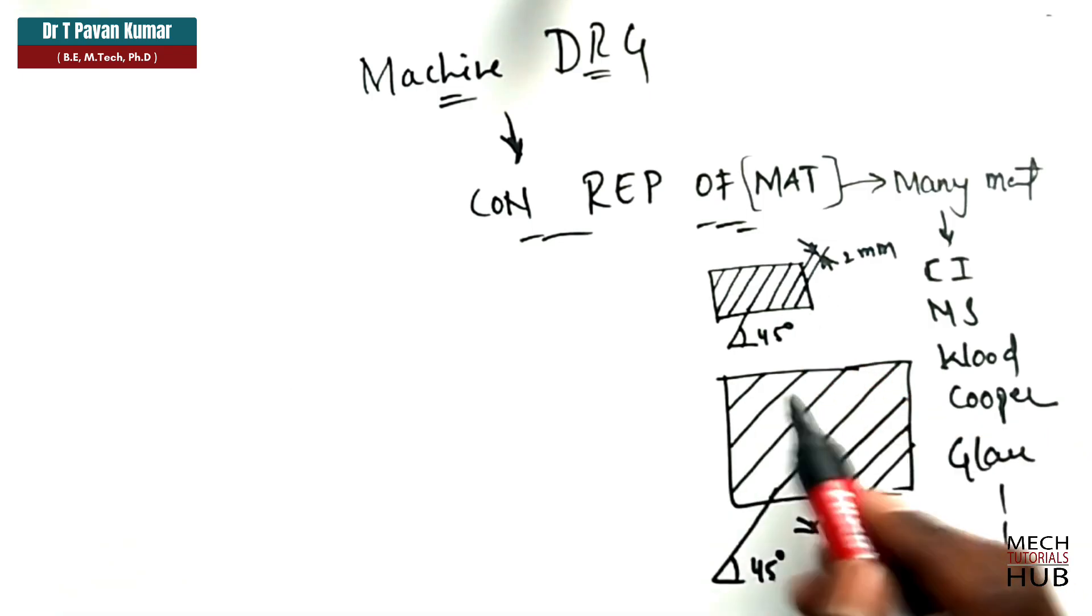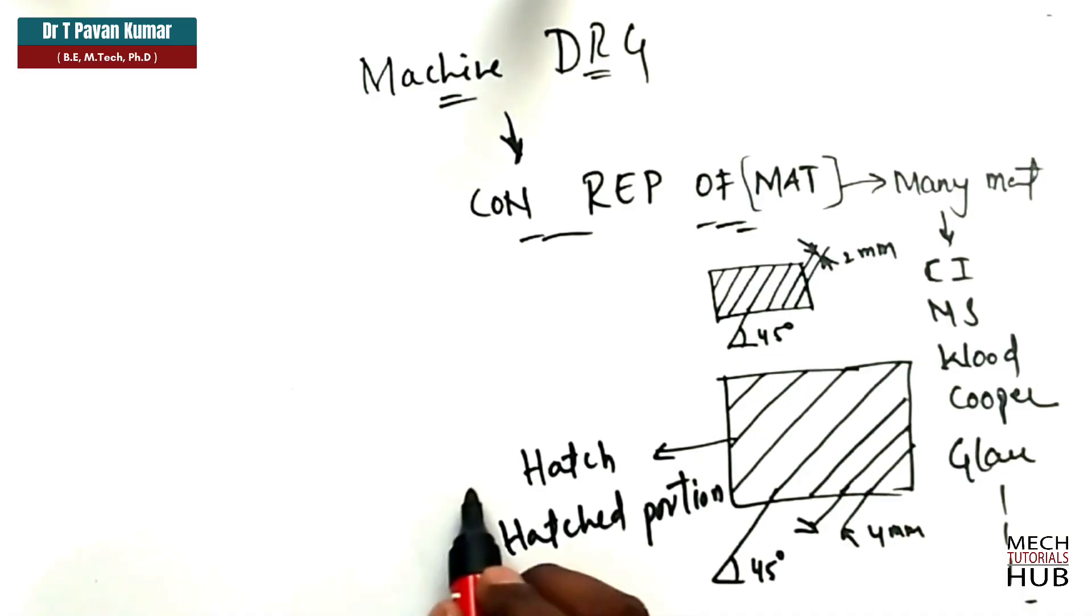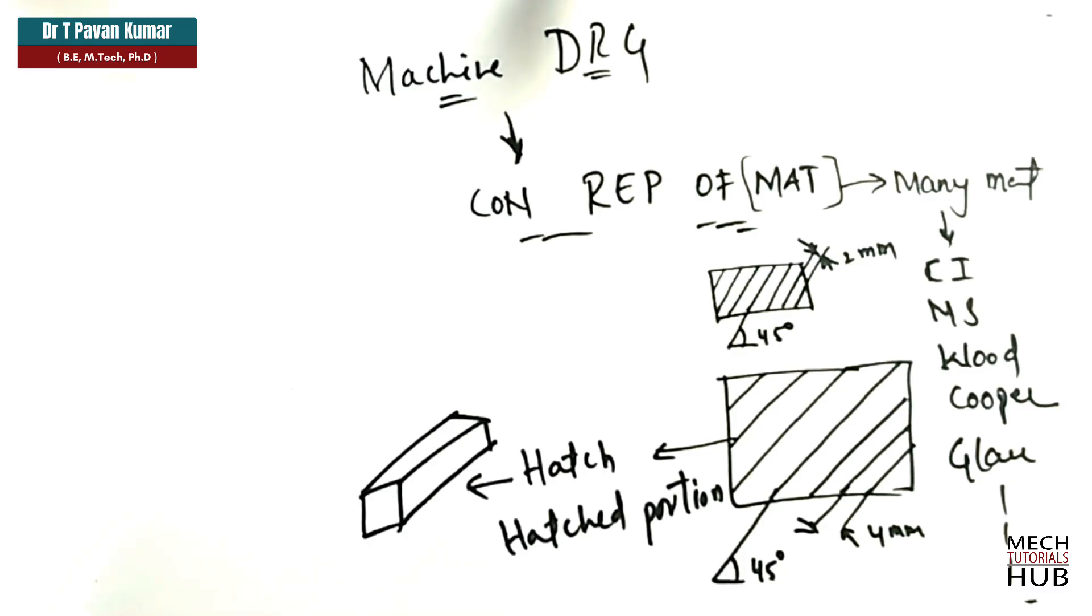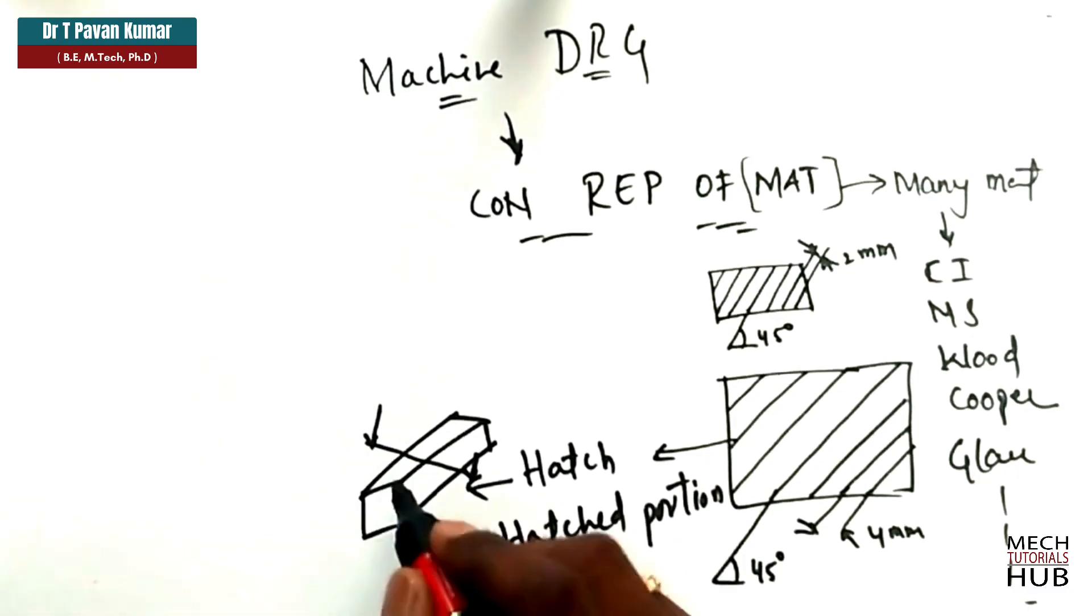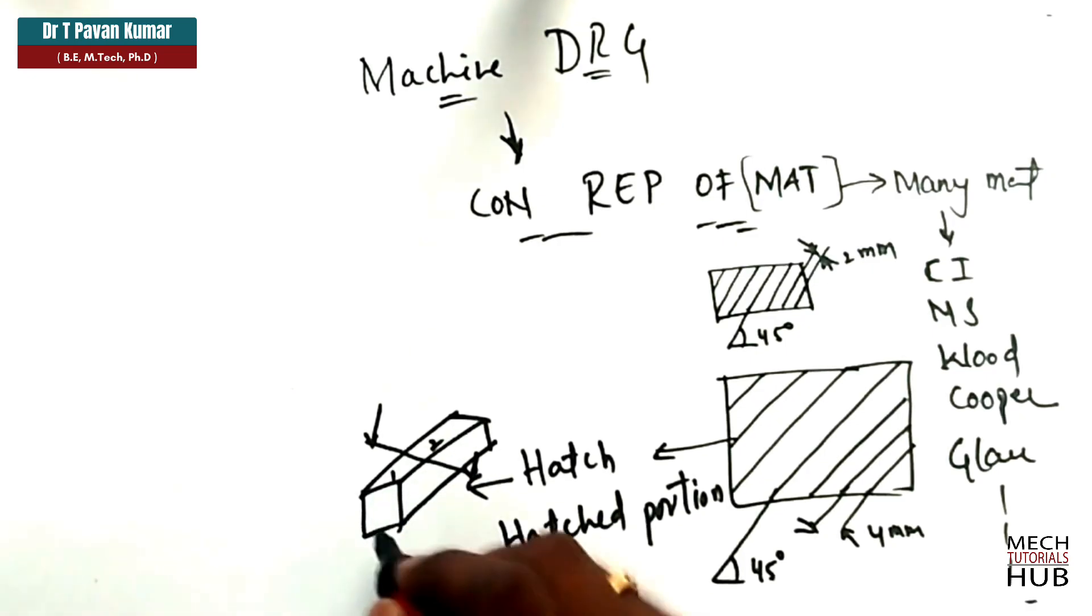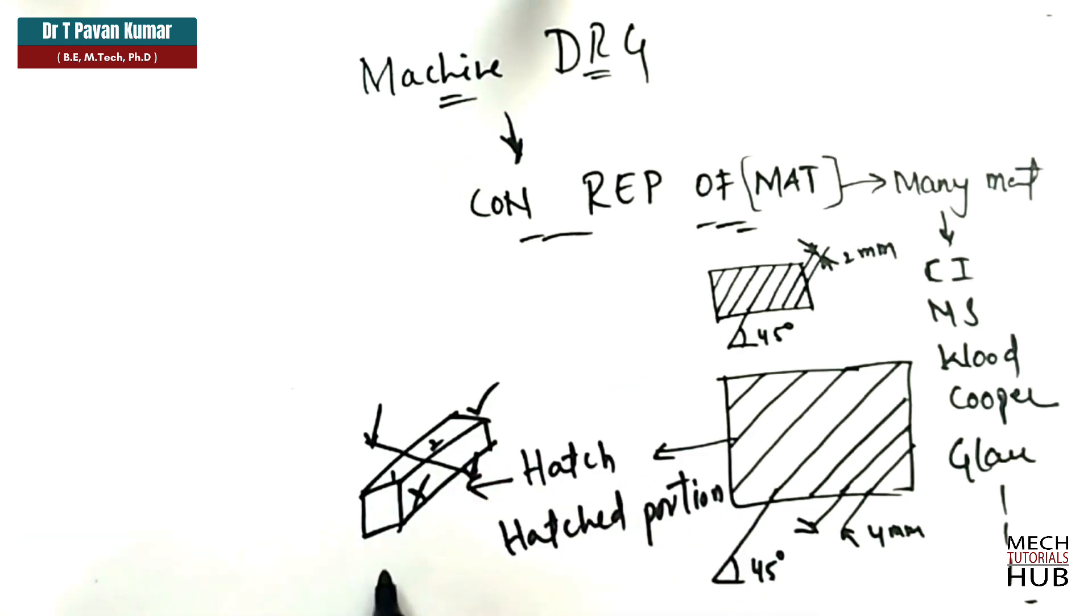Now here I have maintained an offset distance of 4 mm with an angle or inclination of 45 degrees. It is not 45 all the time. It all depends on material to material. It may change to 60 degrees also. It all depends. When we go on to the actual topic, we'll discuss them all. But actually, these lines indicate that it is hatching or hatched portion. Why we do hatching? Why hatching is required?